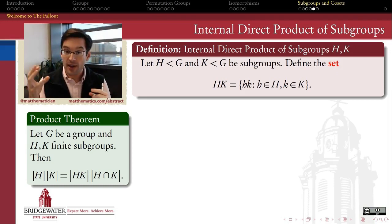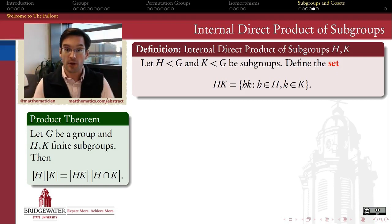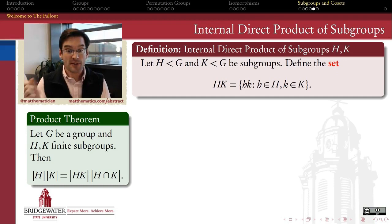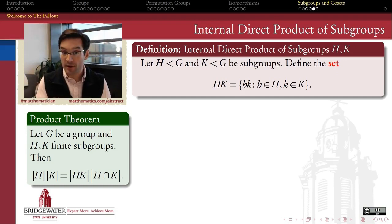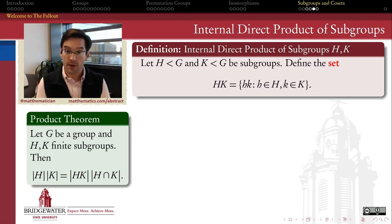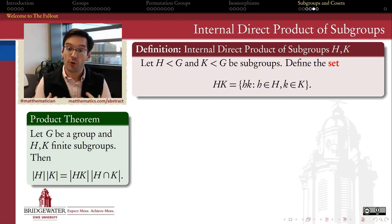Taking a product of groups is a way of using two groups as building blocks to build a larger group. There are many ways to do that, and I want to explore one of them in this video that was actually a key element in our classification of all groups of double prime order. This technique is called the internal direct product of two subgroups.